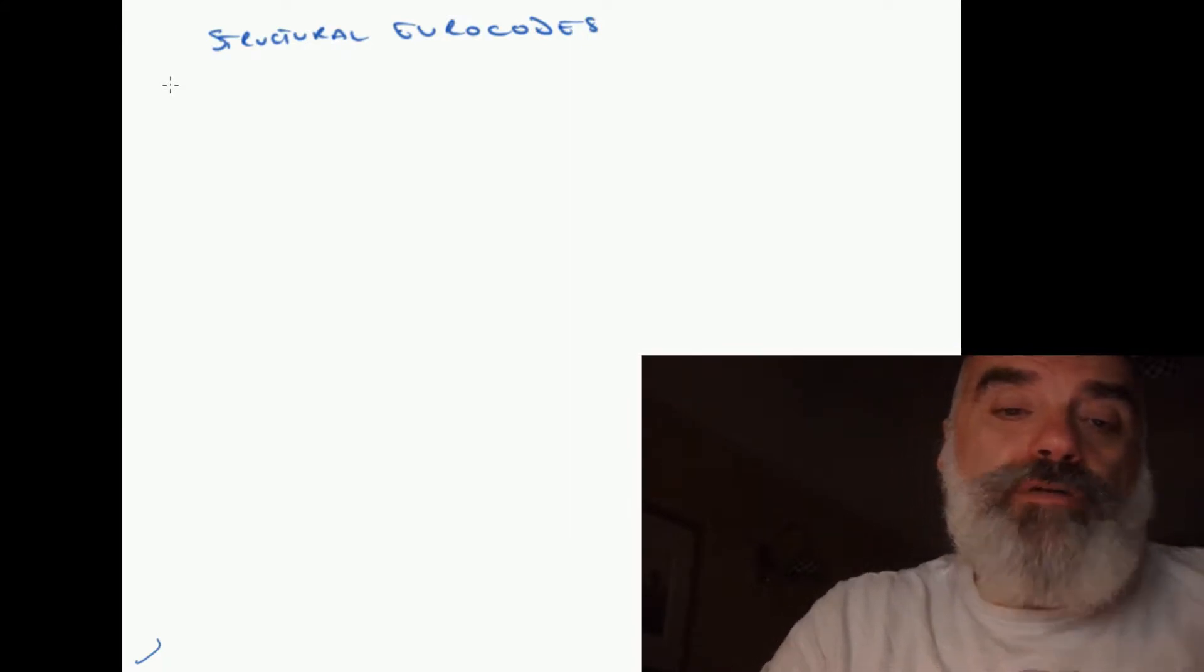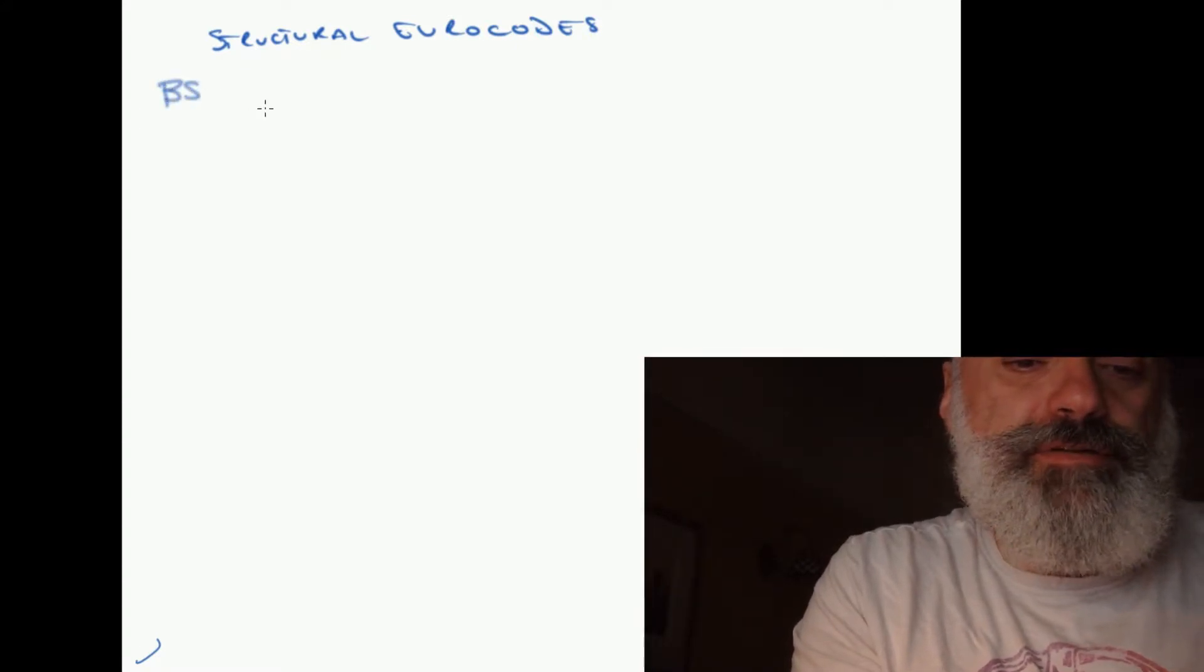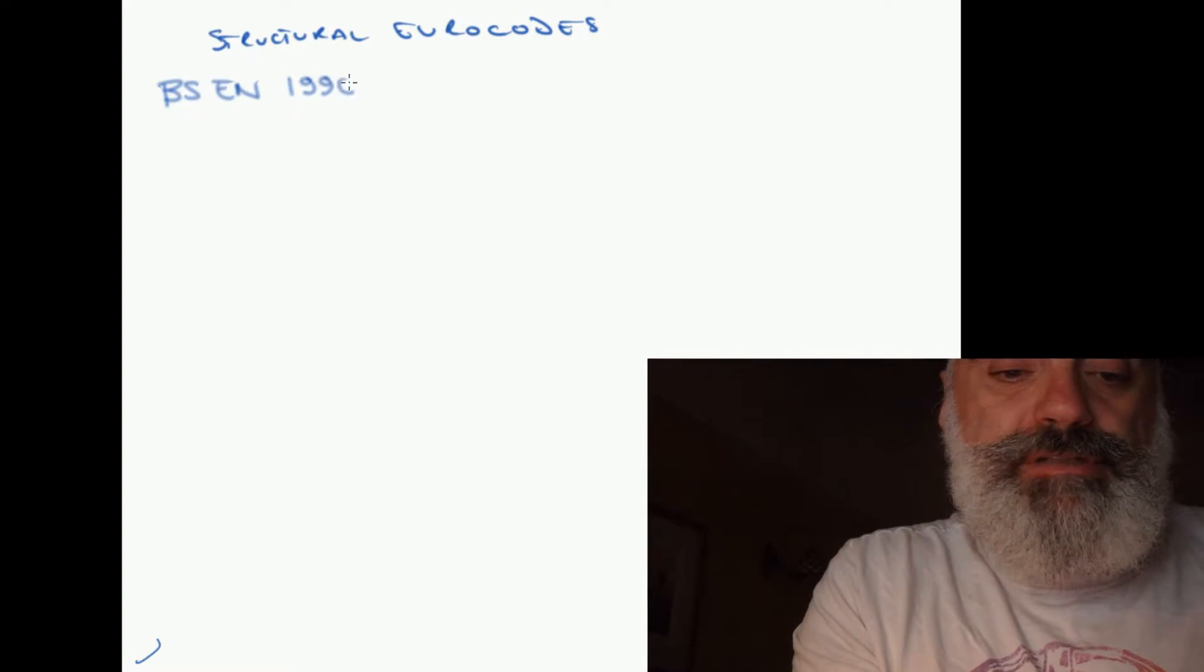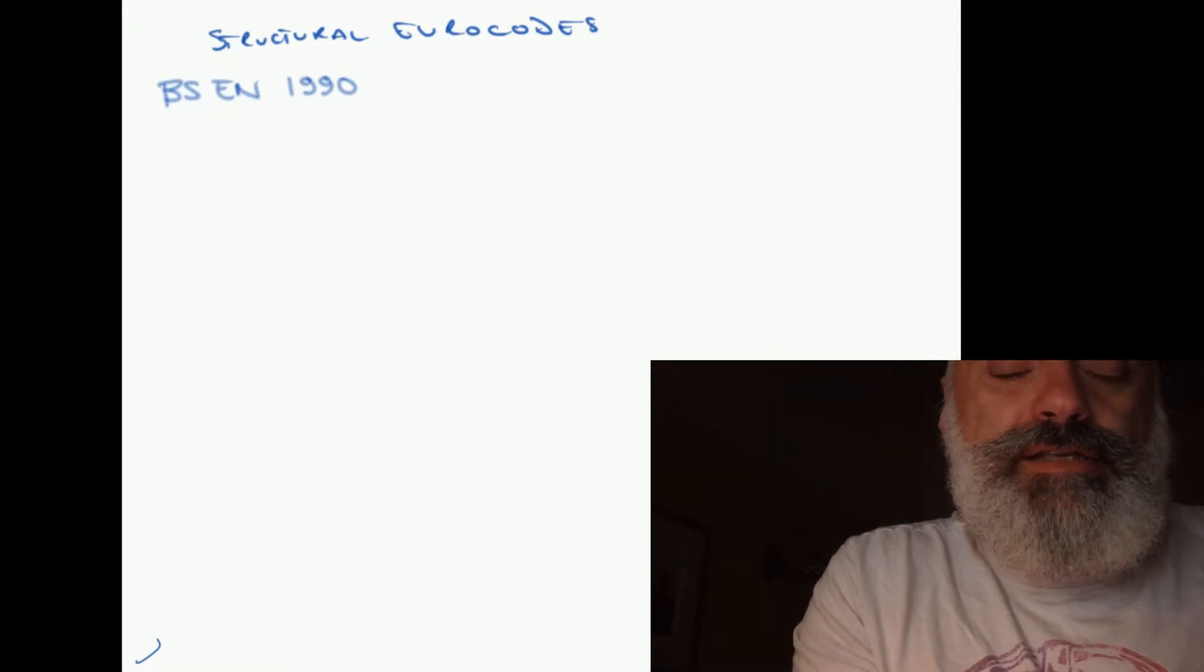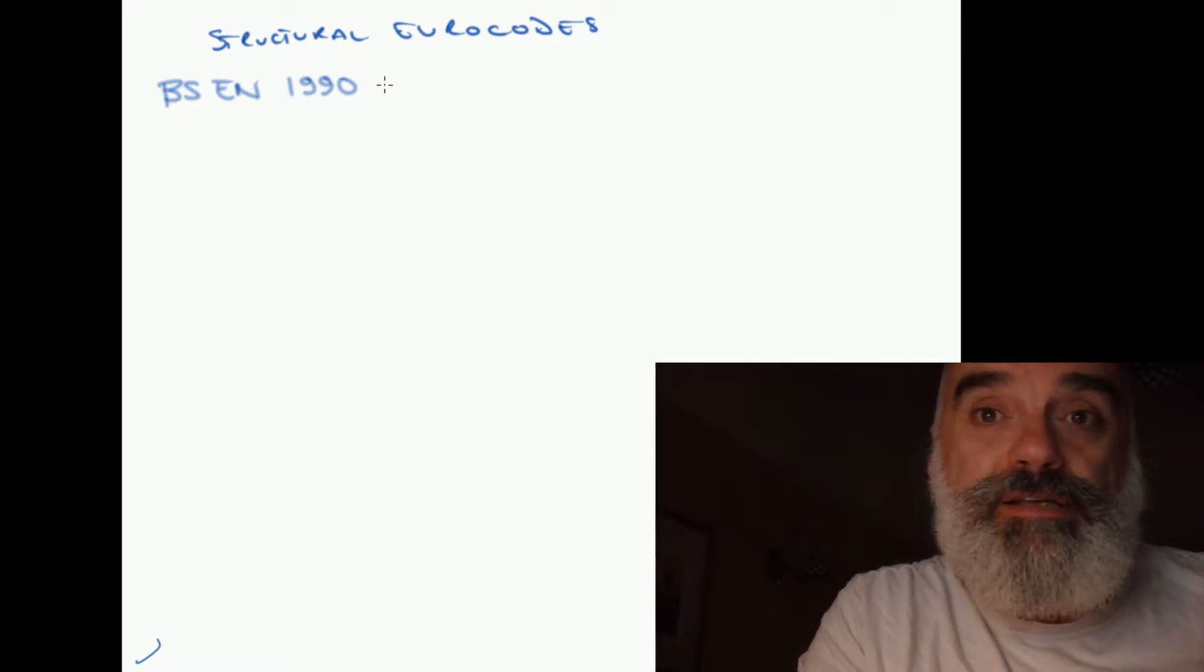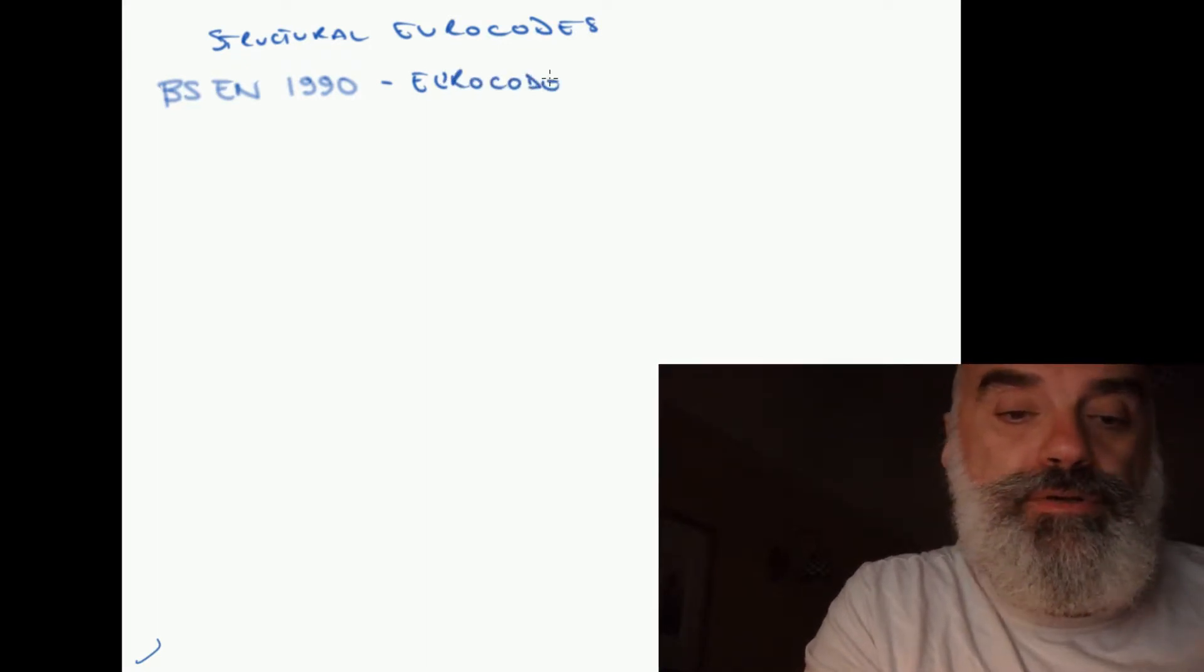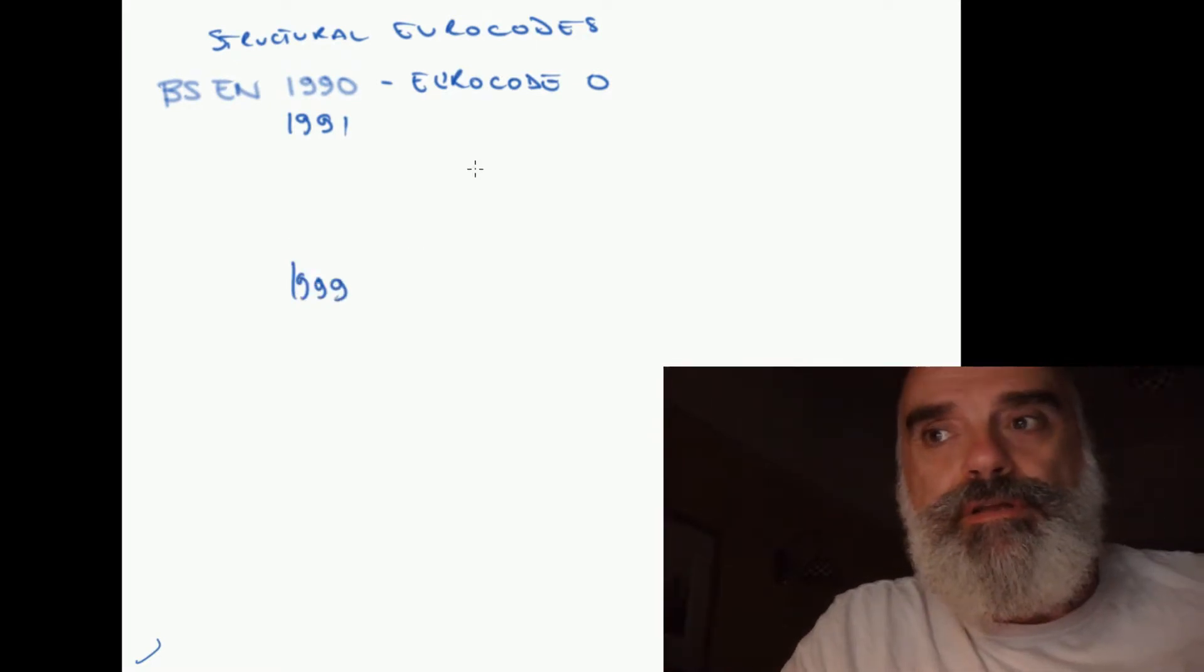The Eurocodes, as I say, are 10 in number. We're going to be looking at the British Standards version, the English language version. BS stands for British Standards, EN is Euronorm or harmonized technical rule. The series begins at 1990, which is commonly referred to as Eurocode 0 or just Eurocode. That's the basis of structural design, EN 1990. Then there are 10 of them, 1991 through 1999, which cover various aspects of structural engineering design.